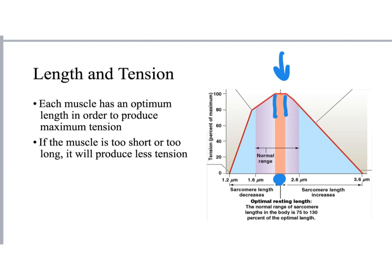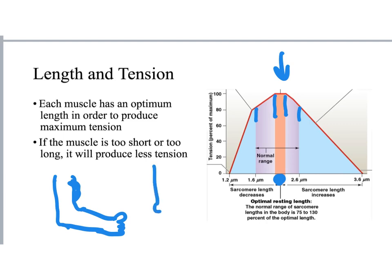The normal resting length of a muscle is typically between 1.6 micrometers and 2.6 micrometers - we're talking about the length of sarcomeres, which is really related to the length of the muscle. For example, if my arm is at 90 degrees, the biceps muscle is a particular length. But if I go ahead and stretch that arm out, that biceps muscle is actually longer. By opening up the arm and extending the elbow, I actually lengthen the muscle; by contracting the elbow, I actually shorten the muscle.